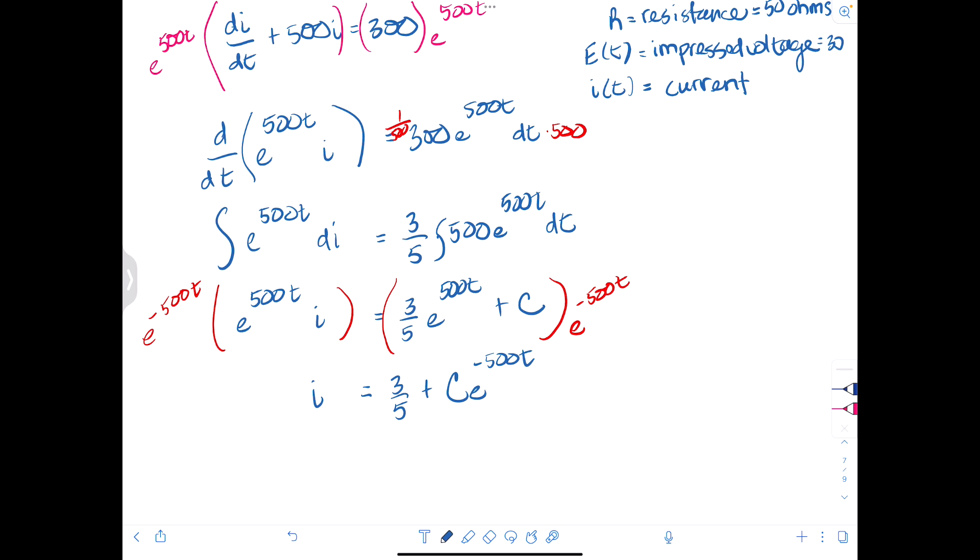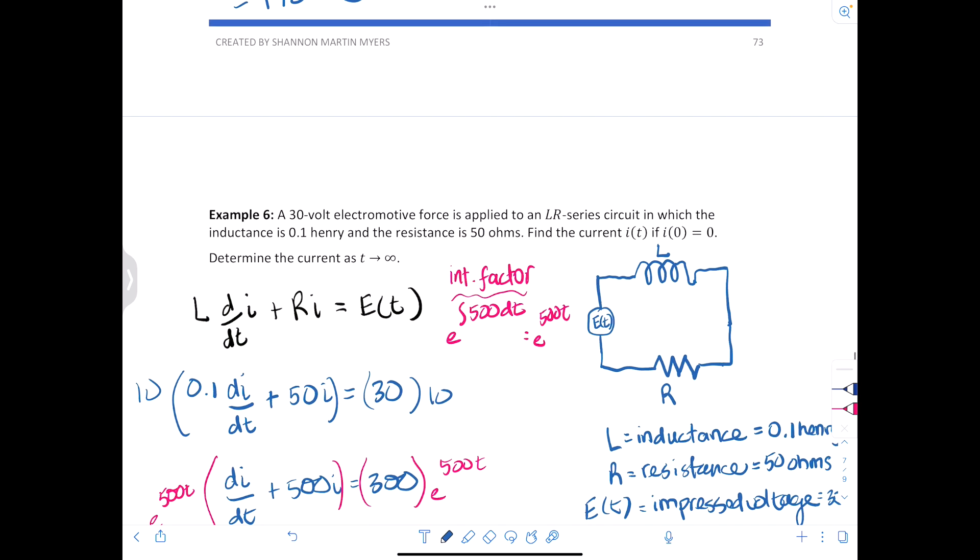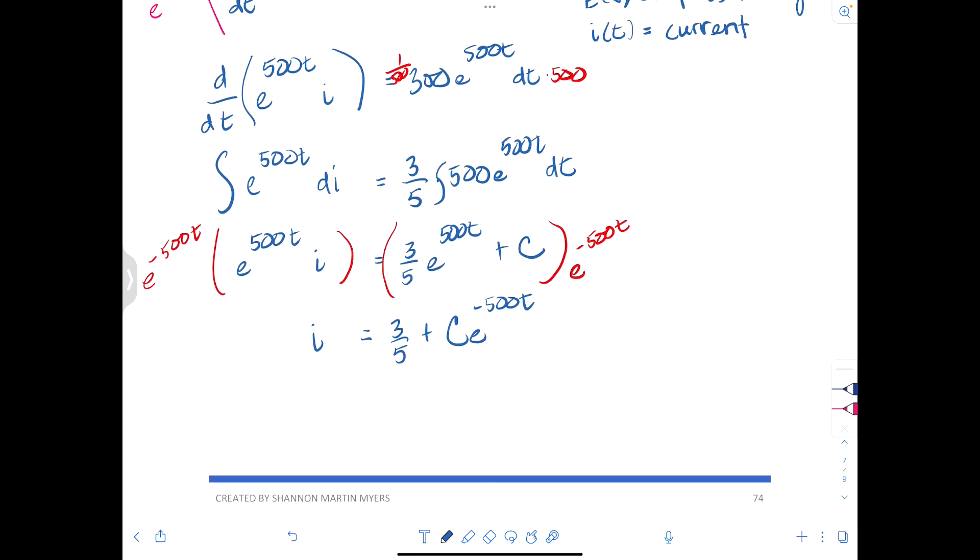Good so far? Awesome. All right. So we've been given another bit of information. We've been given that I at zero is zero. So using that I at zero is zero.